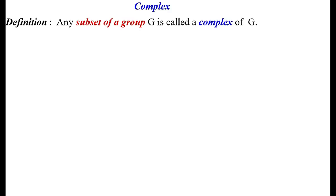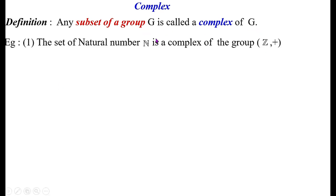A complex is any subset of a group G. Any subset of a group G is called a complex of G. For example, the set of natural numbers N is a complex of the group (Z, +), because N is a subset of integers Z.